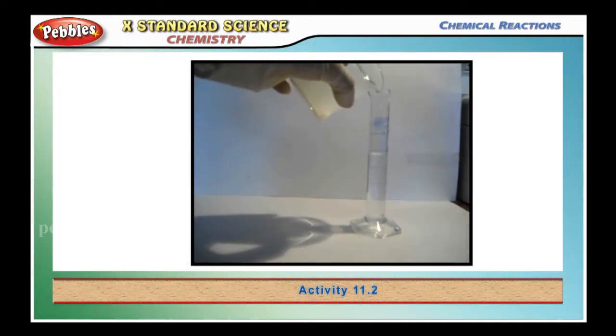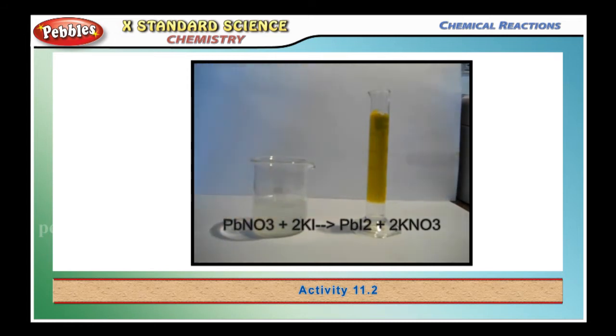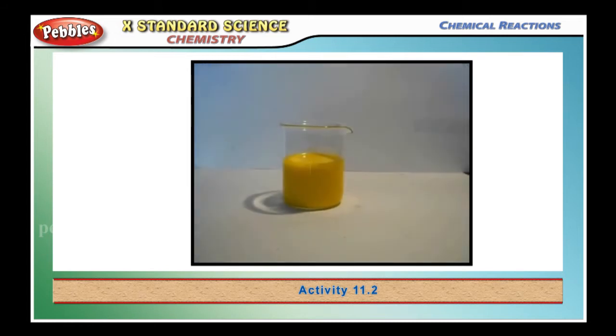So this forms a yellow precipitate, yellow precipitate, and it forms lead iodide. This is another example for chemical reaction.